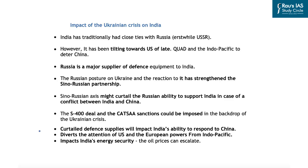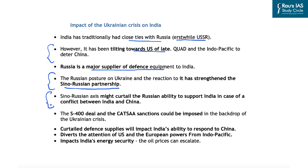The next important issue is what would be the impact of the Ukrainian crisis on India. India has traditionally had close ties with Russia and the erstwhile USSR. India has been tilting towards the United States of late due to the formation of the Quad and the focus on the Indo-Pacific to deter aggressive Chinese maneuvers. However, Russia's current position on Ukraine and the sanctions being imposed by the West are further strengthening the Sino-Russian partnership. If the China-Russia axis is further concretized, it might curtail Russia's ability to support India in case of a conflict between India and China.